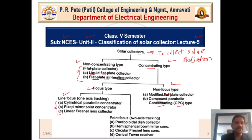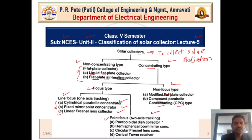The line focus type has three sub-types: one is the cylindrical parabolic concentrator, second is the fixed mirror solar concentrator, and third is the linear Fresnel lens collector. The second focus type is point focus, which uses a two-axis tracking mechanism to track solar radiations. Its types include parabolic disc collectors, hemispherical bowl mirror, circular Fresnel lens, and central tower receiver.